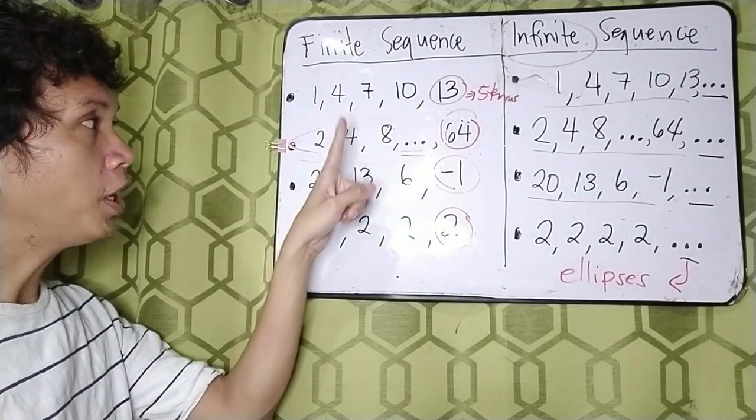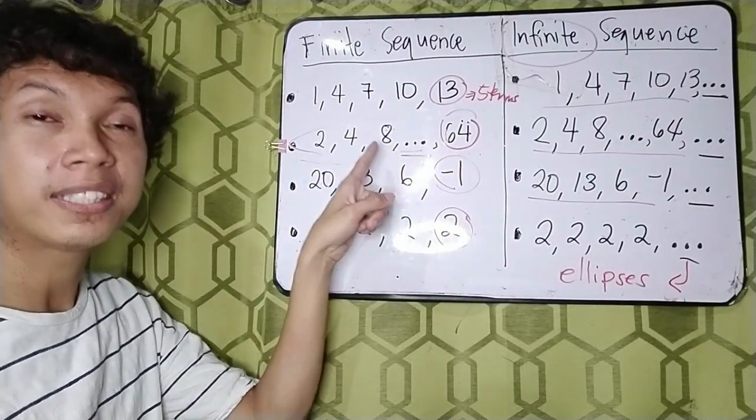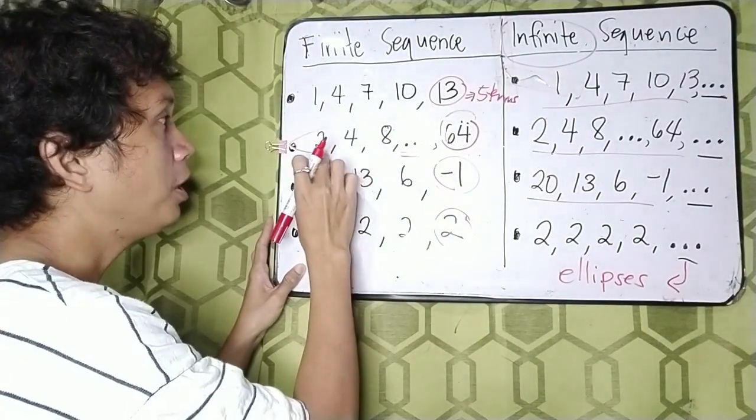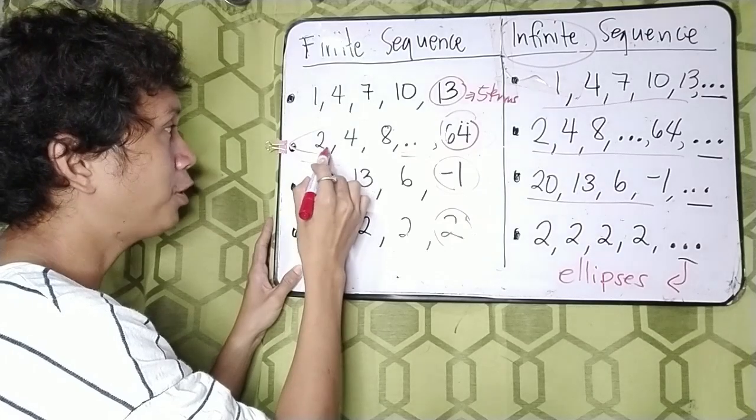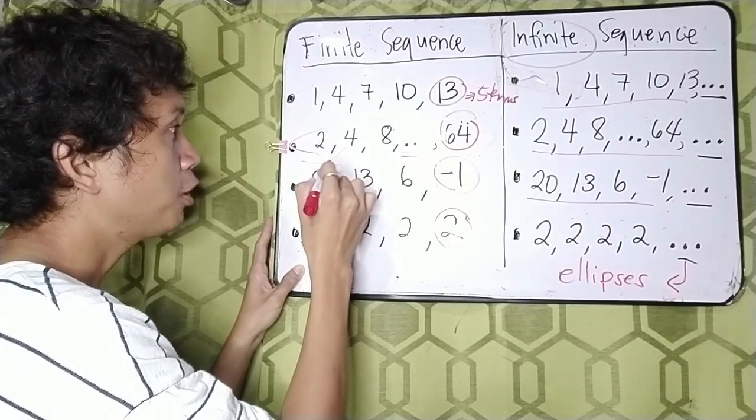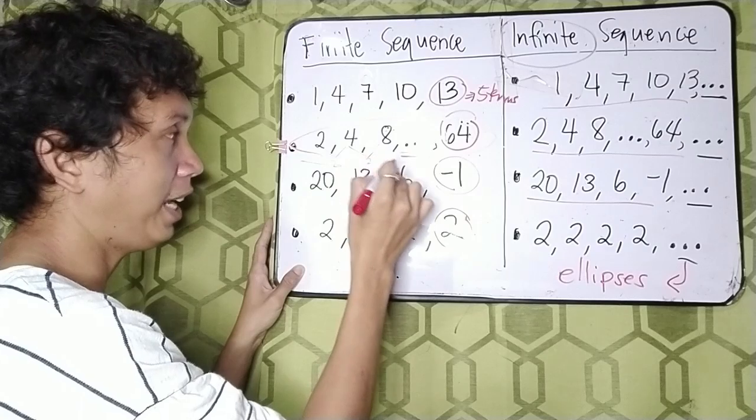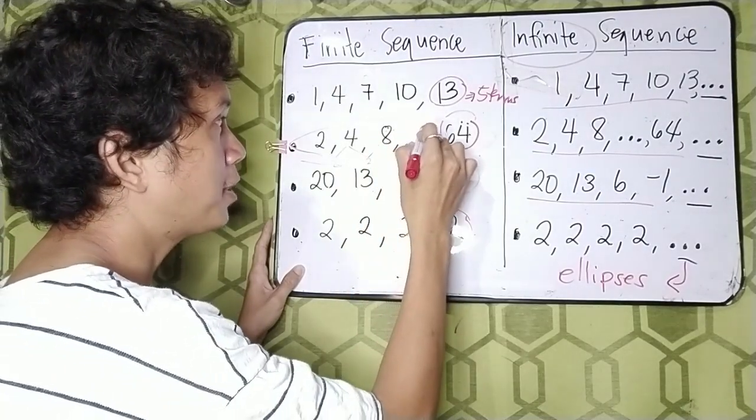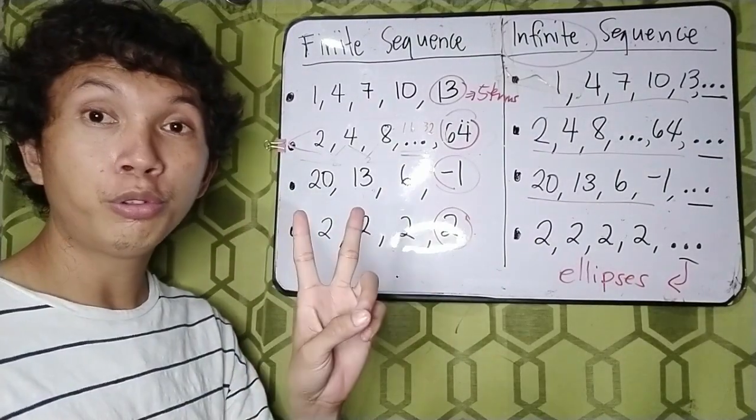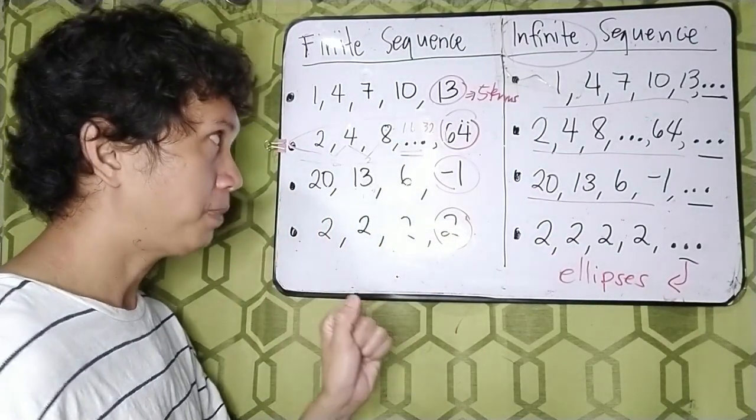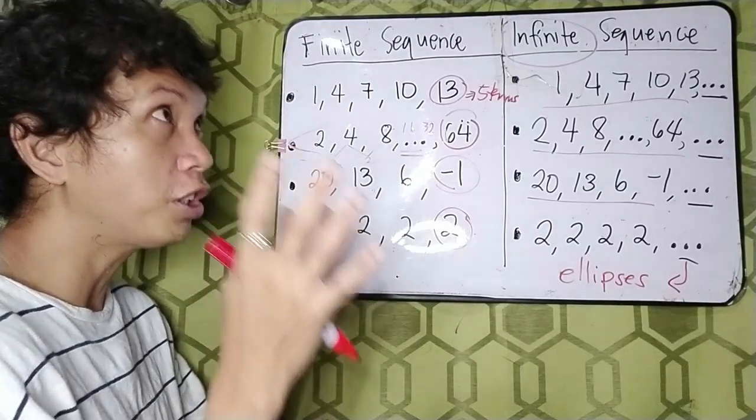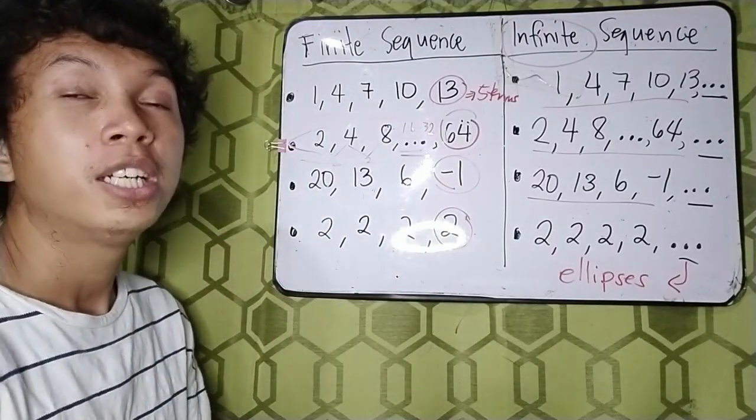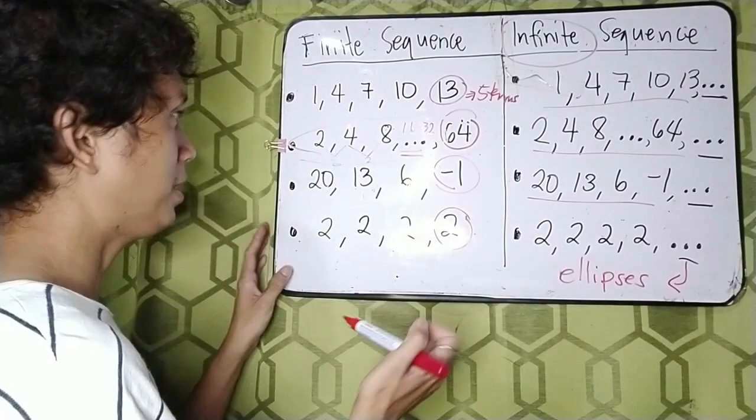2, 4, 8. Since there are missing or skipped terms, we could supply. Right? So the pattern here is by multiplying 2. 2 times 2 is 4. 4 times 2 is 8. And 8 times 2 is 16. 16 times 2 is 32. So there are 2 terms being skipped. It is in order to have a shorter way of writing the sequence. To save space, that's the purpose of it.